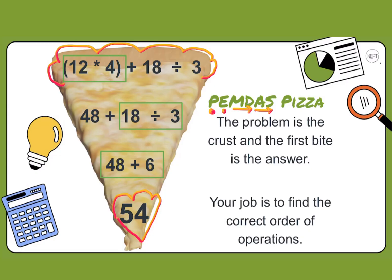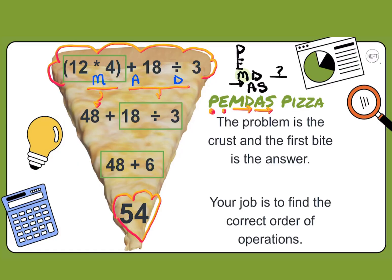We have a multiplication, addition, and division problem. I like to write it out as a stair step using PEMDAS. We have M and D on the same level — whichever is to the left comes first. Multiplication is to the left, so we do 12 times 4, which is 48. We bring that straight down, and everything else drops down unchanged: the addition, the 18, the division symbol, and the three.